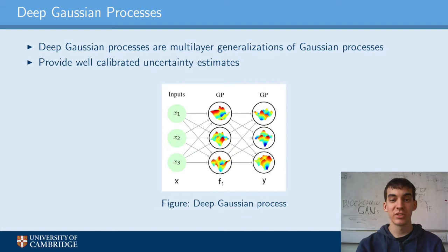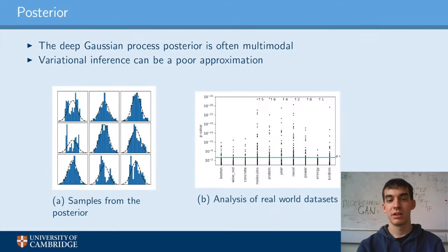A deep Gaussian process is an excellent choice for tasks that require both the flexibility of deep neural networks and the well-calibrated uncertainty estimates of Gaussian processes.